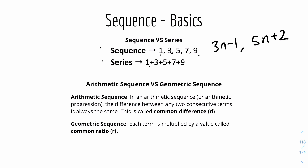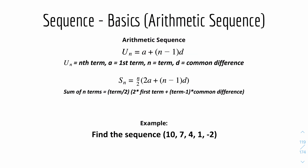Now we have the difference between arithmetic sequence and geometric sequence. In an arithmetic sequence, or arithmetic progression, the difference between two terms is always constant — it's called the common difference, represented as D. In a geometric sequence, each term is multiplied by a value called the common ratio, represented as R. We'll look more into it now, starting with arithmetic sequence.